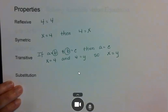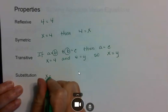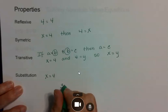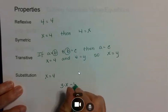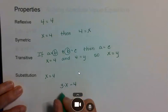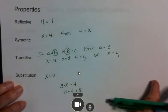The substitution property is used all the time to check a problem. If x equals 4 and you have 3 times x minus 4, you substitute 4 in for x, giving you 12 minus 4 equals 8.